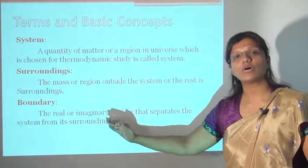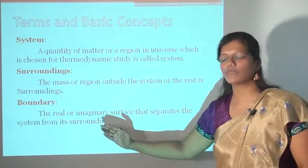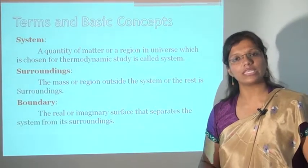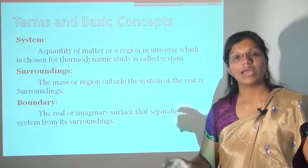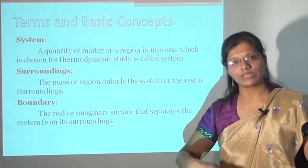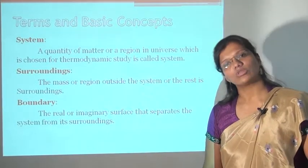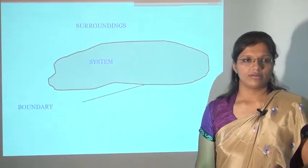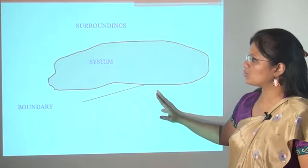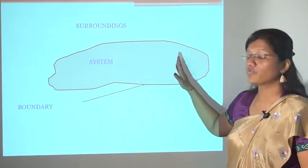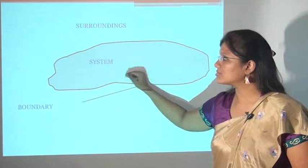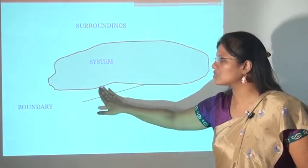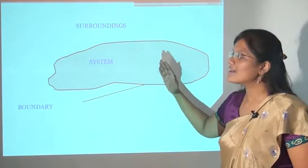Third is boundary. The real or imaginary surface that separates the system from its surroundings is known as boundary. As an example, consider a cricket stadium: the pitch portion of the cricket ground is the system, the boundary around it is the boundary, and the audience rack is known as the surroundings. That is the best example of system, surrounding, and boundary.